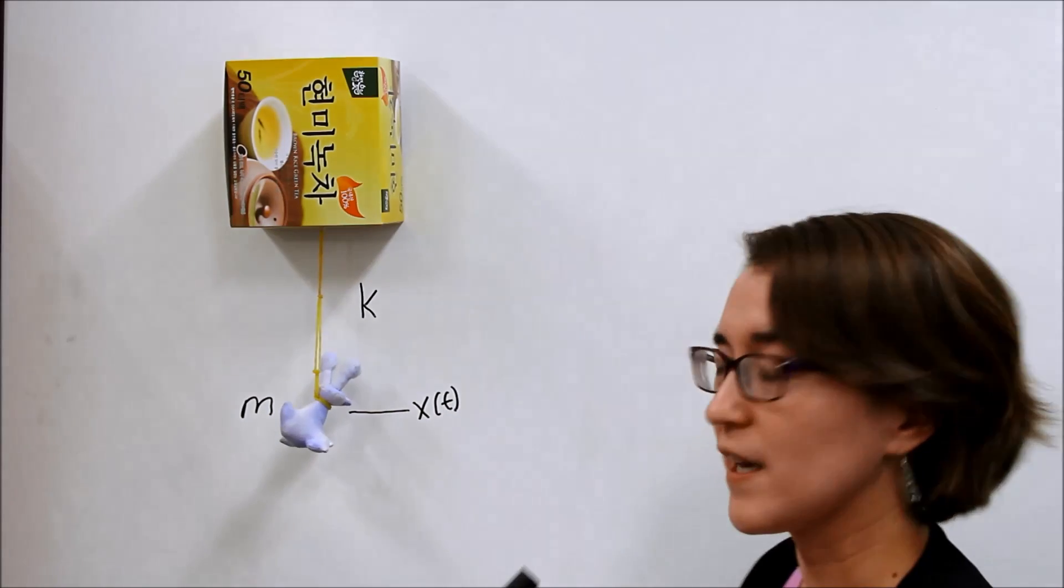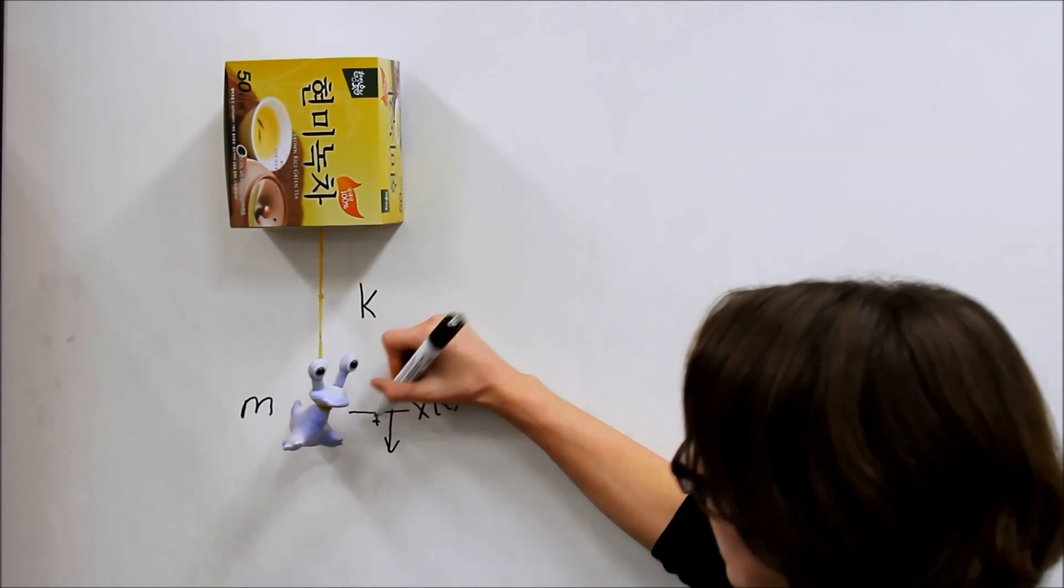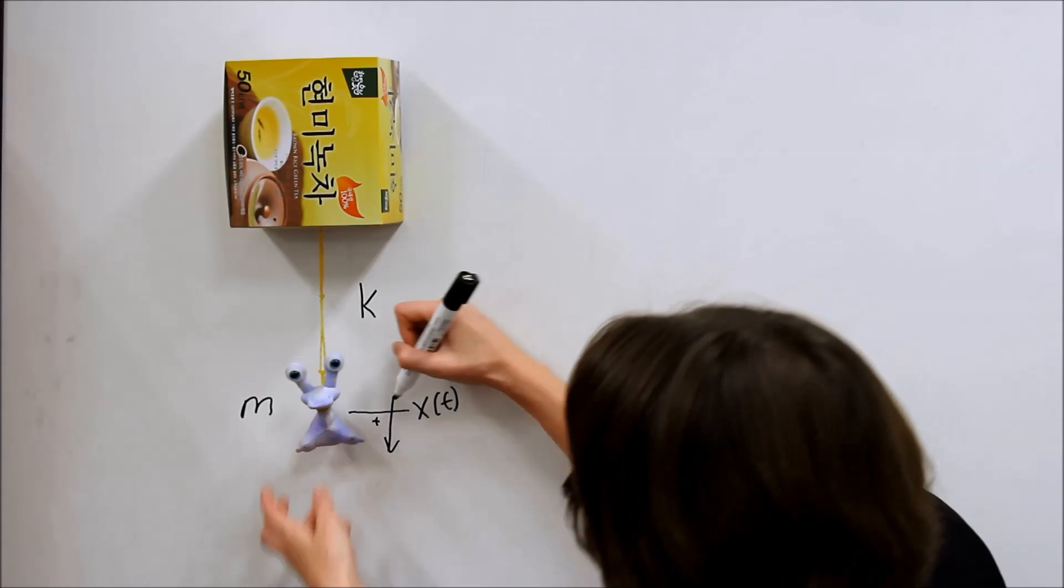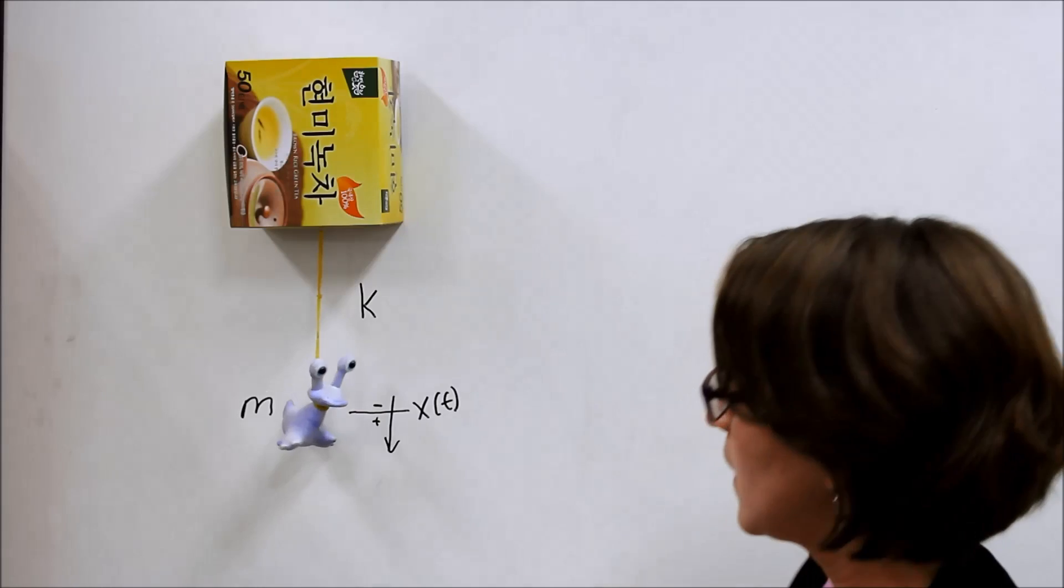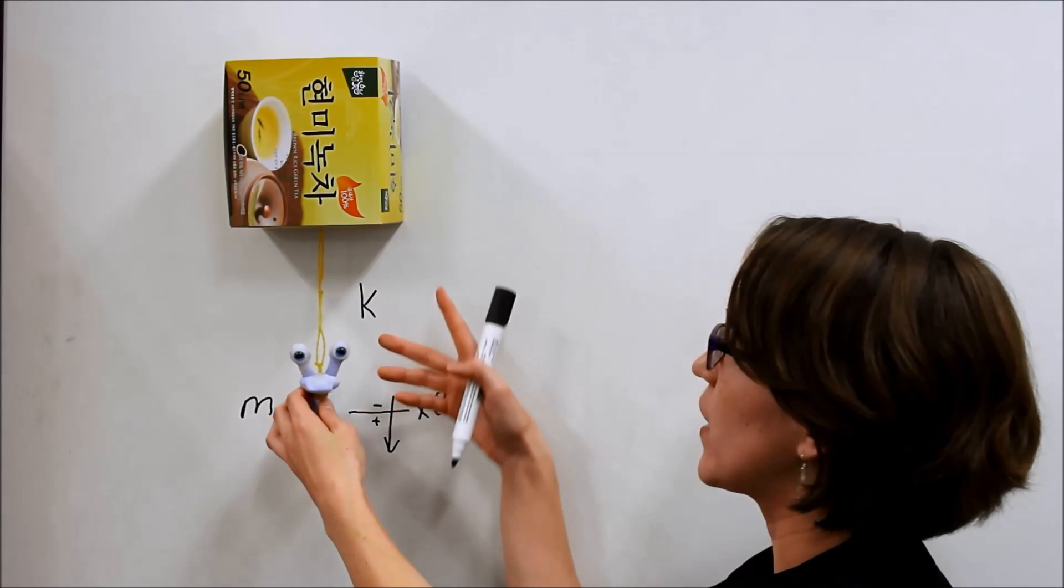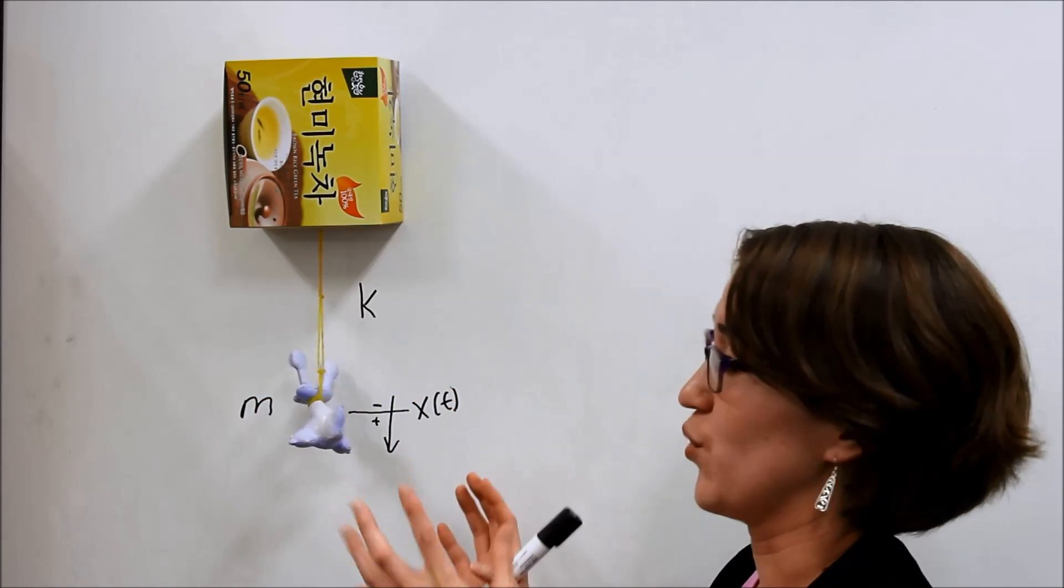And we're going to define it in this direction as positive. So, if she moves downward, it's in the positive direction. If she goes upward, it's in the negative direction. And this x is zero when the spring is not exerting any force, when it's in a neutral position.